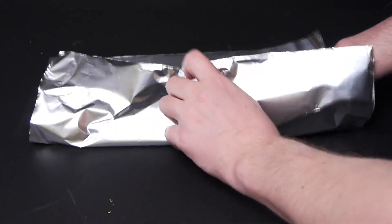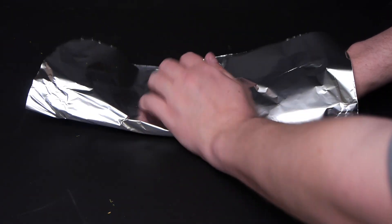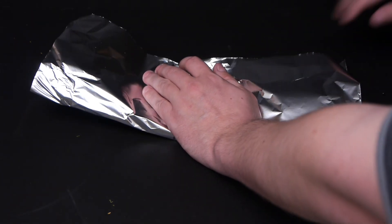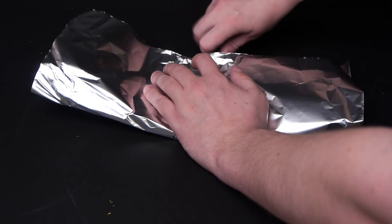Now carefully wrap the tin foil around the ping pong ball shards. Insert a pen in the end, because you want to leave a hole for air to get out when we're all done. Just like this.